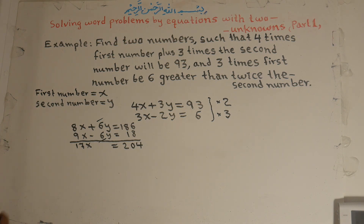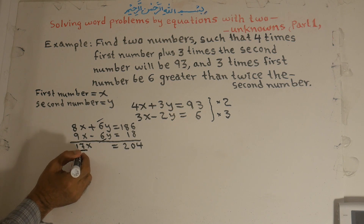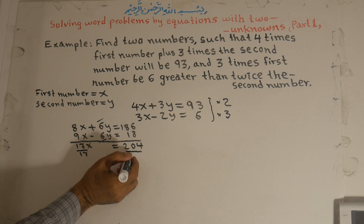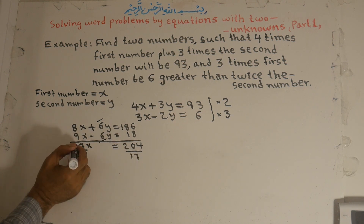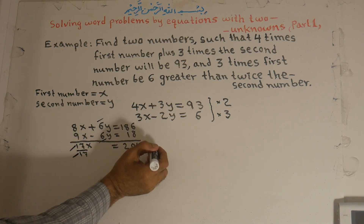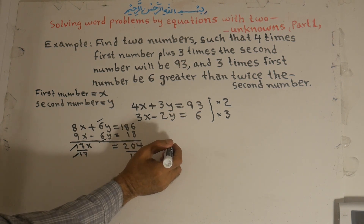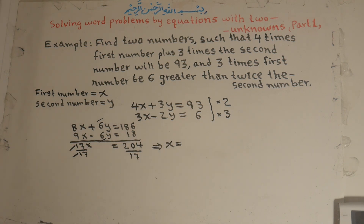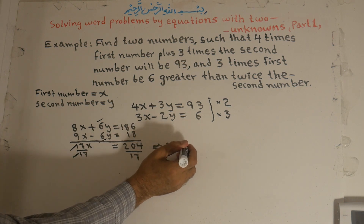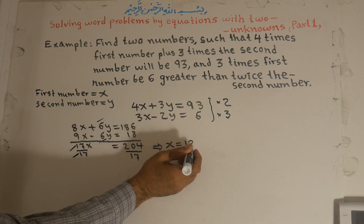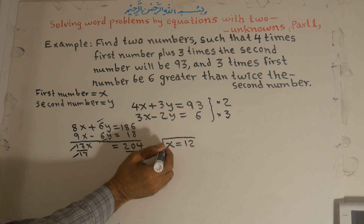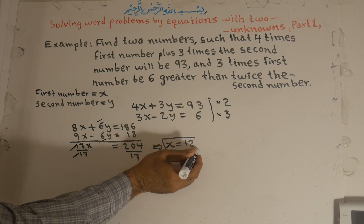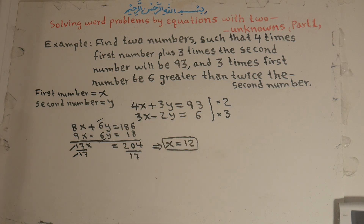Now we divide both sides by 17 to isolate x. The 17 cancels with 17, giving us x equals 204 divided by 17, which equals 12. So x is equal to 12. We have found one of the unknowns.